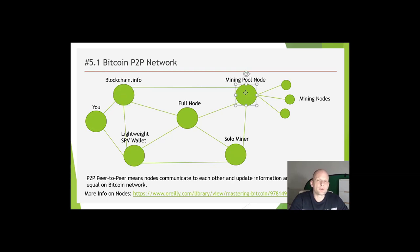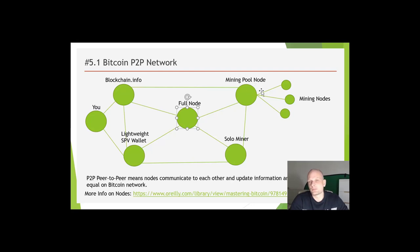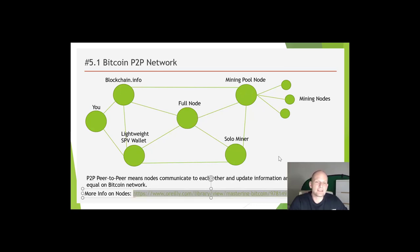Bitcoin network can't be taken down because there are no main nodes or nodes with more privileges than others — all nodes are equal. All they do is exchange information about transactions and mined blocks. When a transaction is made on Bitcoin blockchain, it is broadcast to all nodes. Then miners take those transactions, put them into a block, mine it, and confirm the transaction. This is why Bitcoin is known as a decentralized blockchain — unlike Ripple, nobody is in control or can affect or take down this blockchain.